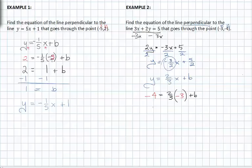Now we can solve for b. We get negative 4 equals negative 2 plus b. Adding two to both sides, we get b equals negative 2.